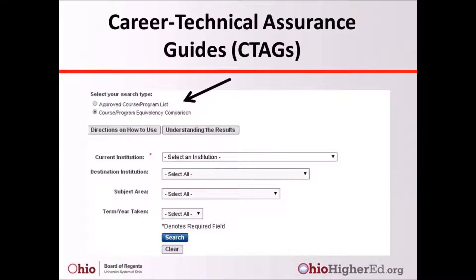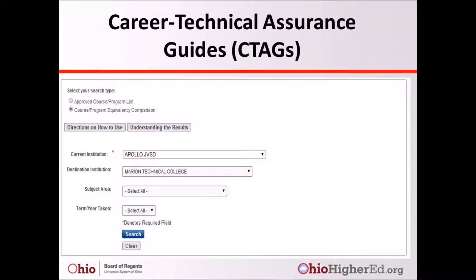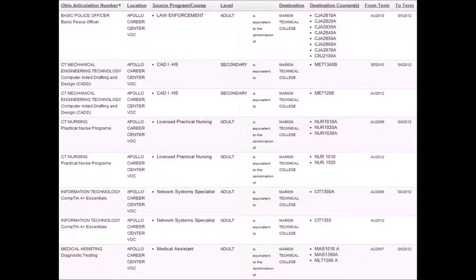The other search option is Course or Program Equivalency Comparison. To start, click on Course or Program Equivalency Comparison. For this option, at least the current institution must be selected. If you need additional information or directions for navigating the CTAG Course or Program Reporting System, please review the Directions on How to Use or the Understanding Results tab. The example here shows a search of all course and program equivalencies between the Apollo Career Center and Marion Technical College, displaying various equivalencies and effective terms for different CTAG courses.